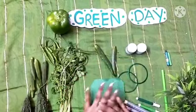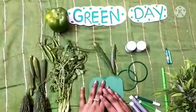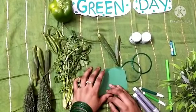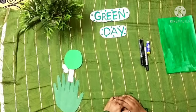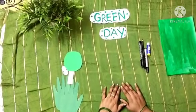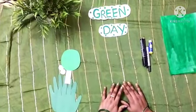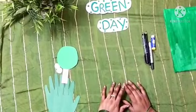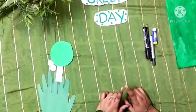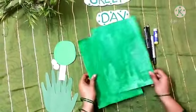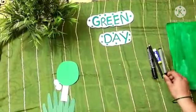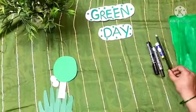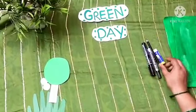So now, let's move on to the green colour day activity. Let's go. Are you all ready to do green colour day activity? Let's start. So now we'll start our activity. Today, we are going to do a very nice activity. And for that activity, we need material: green sheet, one marker or sketch pen, whatever you have, one pencil, Fevicol stick. Okay?